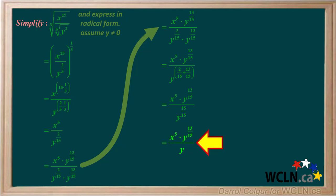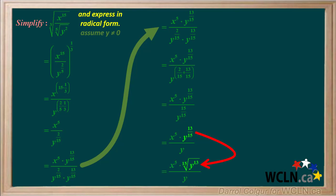So we're left with x to the 5th times y to the thirteen-fifteenths over y. But we're asked to express the answer in radical form, so we must convert y to the thirteen-fifteenths to radical form. 15 is the index of the radical and 13 is the exponent of y, so y to the thirteen-fifteenths is converted to the 15th root of y to the 13th.